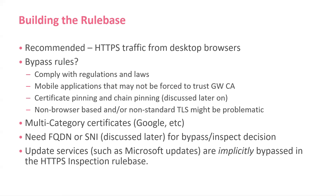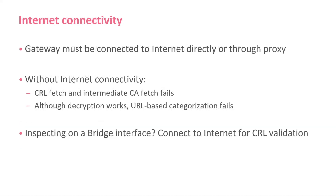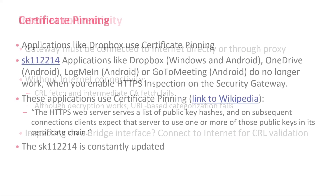Think about multi-category certificates and SNI, which you can use for bypass and inspect decisions. Updatable objects can be implicitly bypassed by the inspection policy. The gateway always has to be connected to the internet directly or through a proxy — without internet we can't do a CRL fetch. We can also do categorization based on URL if we don't have direct internet access. If inspecting on a bridge, make sure you have internet connectivity for CRL.